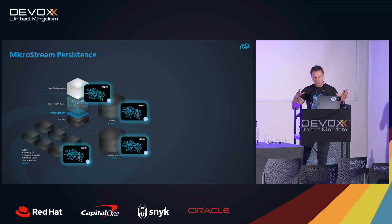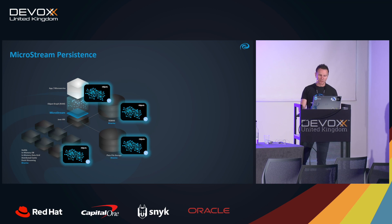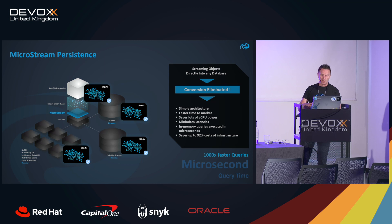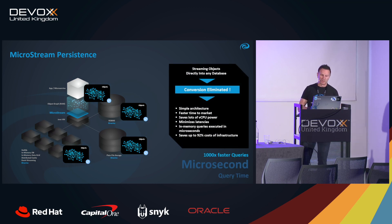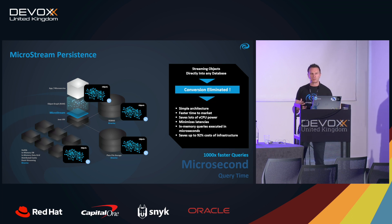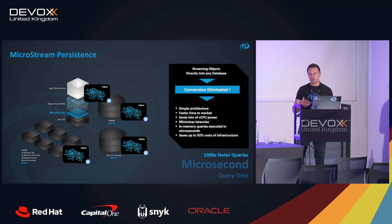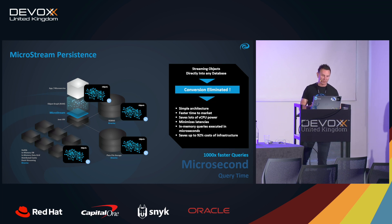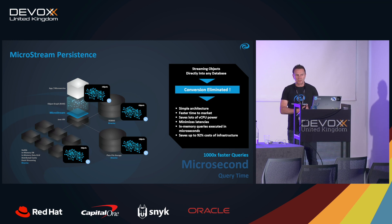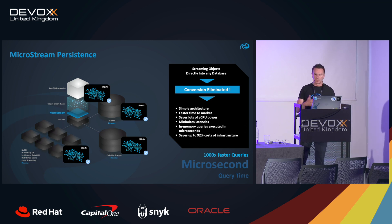We serialize the object graph as it is, which means there is no more mapping at all. This is very simple to use and very fast because there is no more data conversion behind the scenes, saving lots of CPU power and minimizing latencies. This concept gives you the possibility to keep your object graph in memory and search it directly in memory. We haven't invented a query language — that's not necessary because Java's Streams API enables you to search your object graphs in microseconds.